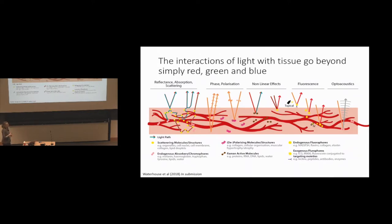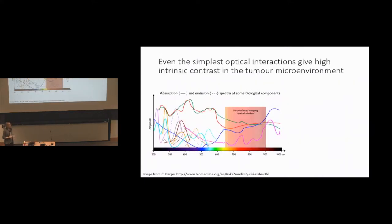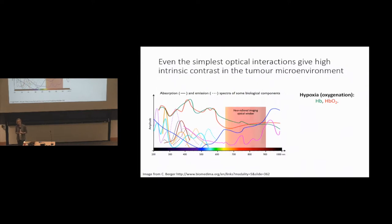This is a huge range of different interactions of light with tissue, and we work on most of these to some extent. Even the simple optical interactions of reflectance, absorption, and scattering can tell us something about intrinsic contrast in the tumor microenvironment. We can measure oxygenation of blood vessels using the differential absorption of deoxyhemoglobin and oxyhemoglobin. That's really useful for characterizing cancer, because when a tumor is first developing, as the number of cells grows, some cells in the center will be beyond the oxygen diffusion distance — typically about 100 to 150 microns — from the local blood vasculature.